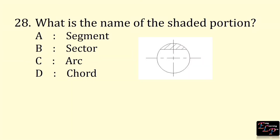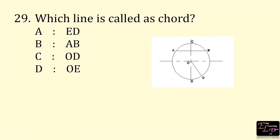What is the name of the shaded portion? It is called a segment. Which line is called a chord? Line AB is called a chord.